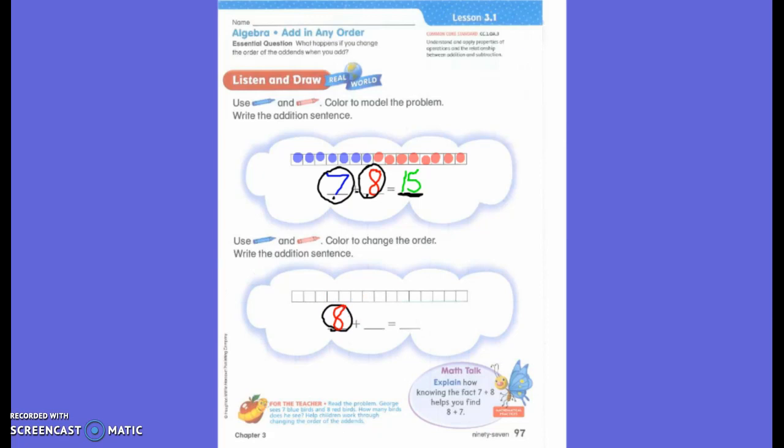Can I write eight again? No, I have to write seven. Why? Because I'm just switching them around. Because I'm just switching them around, right? So I have to write seven next. All I did was change those two addends.